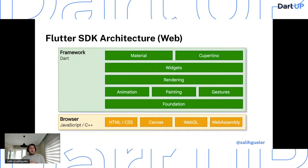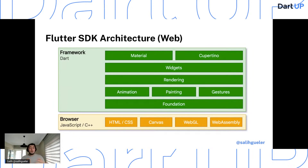There are two options Flutter uses to show content on the web: HTML and WebGL. In HTML mode, Flutter uses HTML, CSS, Canvas, and SVG. In WebGL mode it uses Skia compiled with WebAssembly, called CanvasKit. HTML mode offers the best code size characteristics, while CanvasKit provides the fastest path to the browser's graphics stack and higher graphical fidelity.